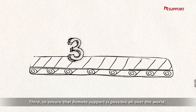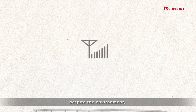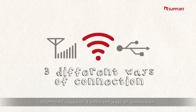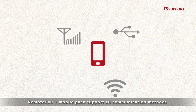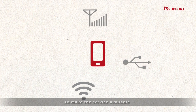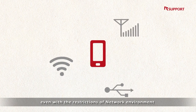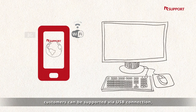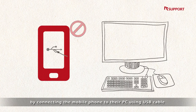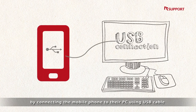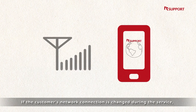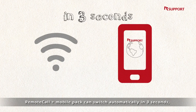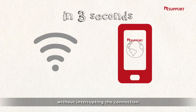Third, to ensure that Remote Support is possible all over the world despite the environment, R-support supports three different ways of connection. Remote Call Mobile Pack supports all communication methods to make the service available even with restrictions of network environment. Even if the network is restricted, customers can be supported via USB connection by connecting the mobile phone to their PC using a USB cable. If the customer's network connection changes during the service, Remote Call Mobile Pack can switch automatically in three seconds without interrupting the connection.